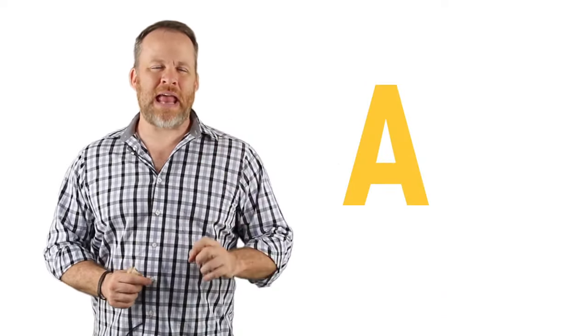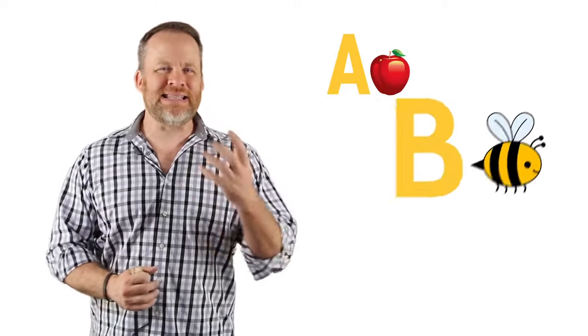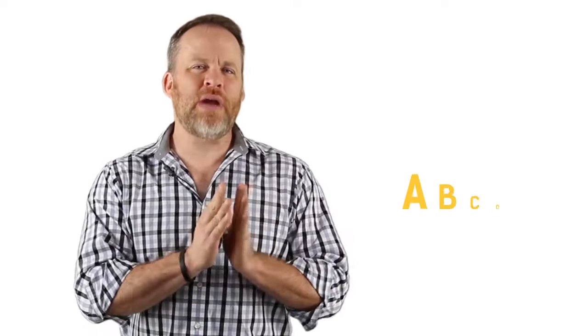I also did the same thing with letters. A for me I decided it was going to be an apple. B was going to be a bumblebee. C was going to be a cat. D was going to be a dog. I created pictures for every letter of the alphabet.